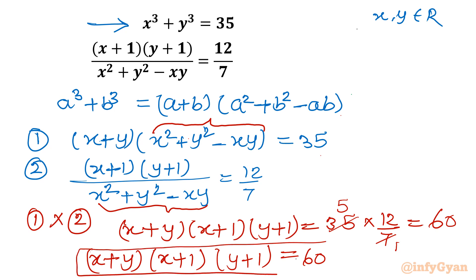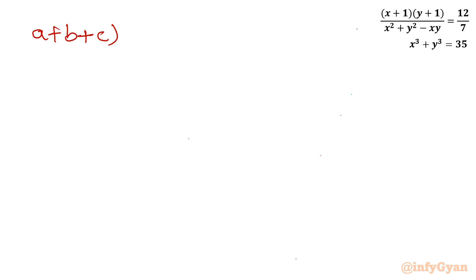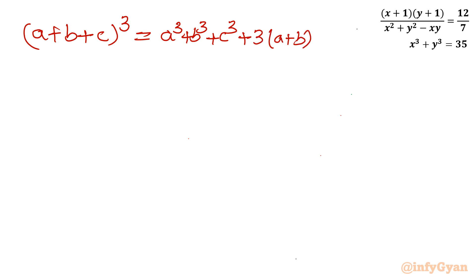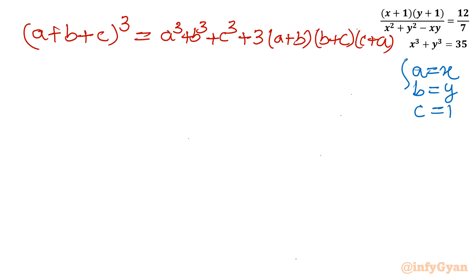We now need to solve these equations together. I will use the identity for (a+b+c)³, which equals a³ + b³ + c³ + 3(a+b)(b+c)(c+a). I will apply this with a = x, b = y, and c = 1.